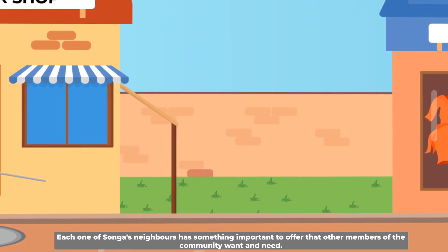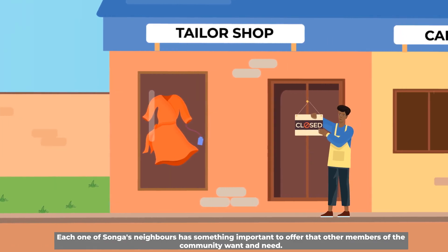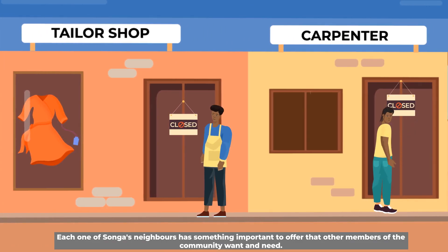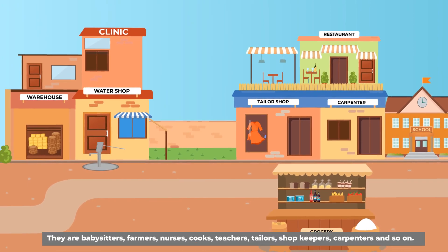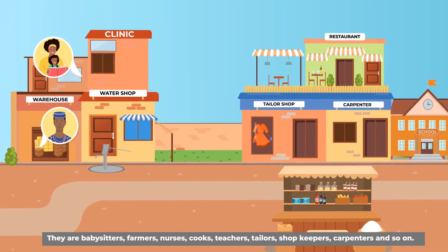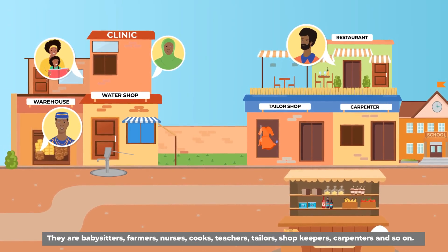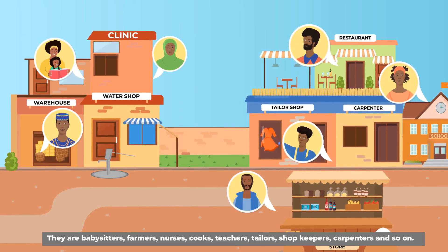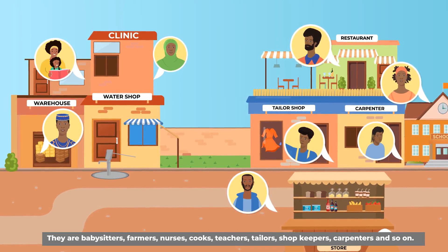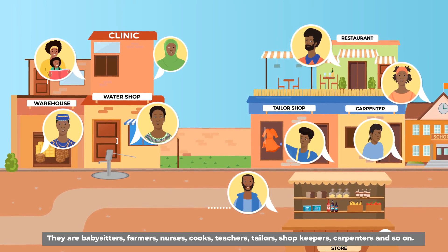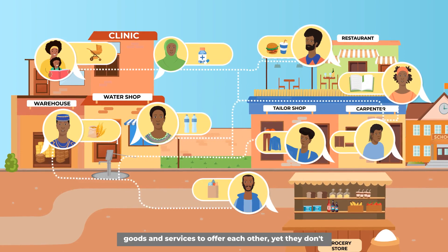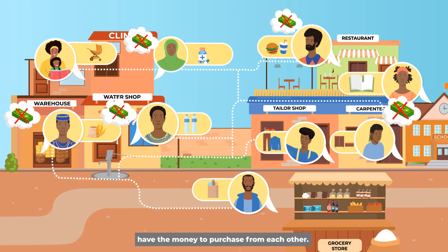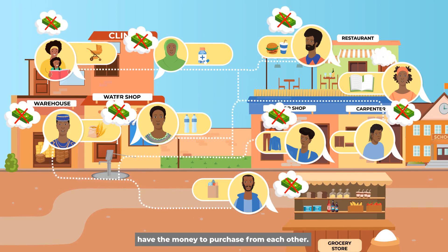Each one of Songa's neighbors has something important to offer that other members of the community want and need. They are babysitters, farmers, nurses, cooks, teachers, tailors, shopkeepers, carpenters and so on. During a crisis, each of these neighbors still has goods and services to offer each other. Yet they don't have the money to purchase from each other.